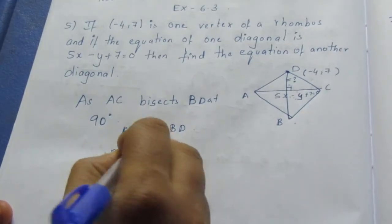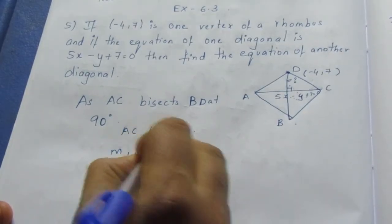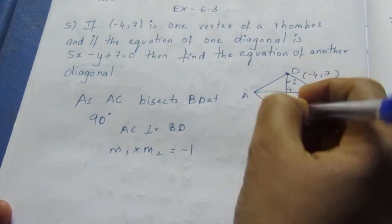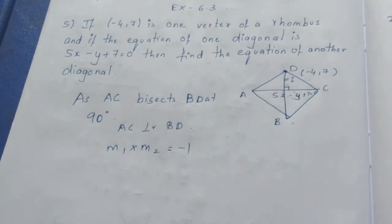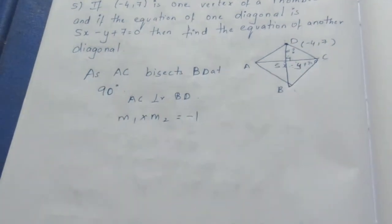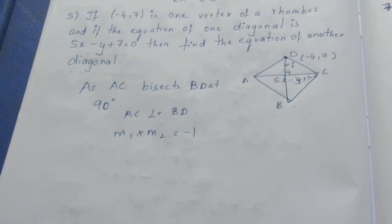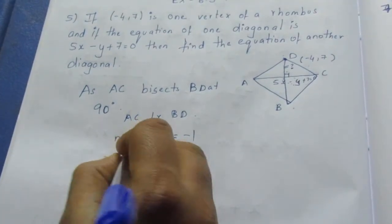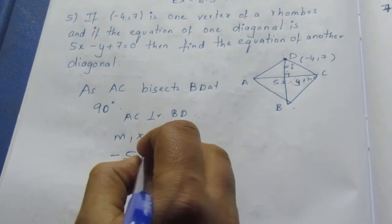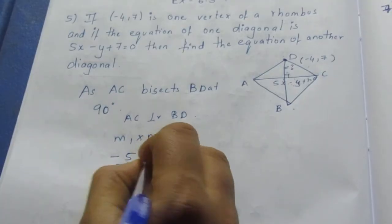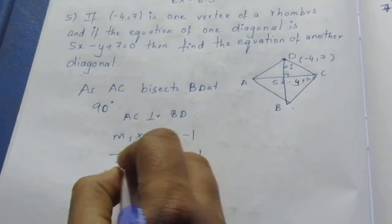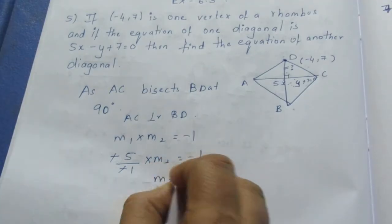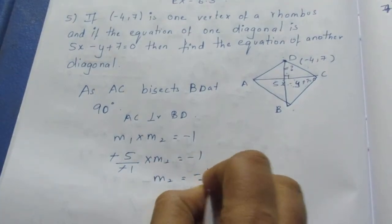For perpendicular lines, M1 multiplied by M2 equals minus 1. The slope of the given diagonal 5x minus y plus 7 equals 0 is M1 equals 5. So 5 multiplied by M2 equals minus 1, giving M2 equals minus 1 by 5.